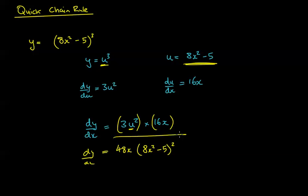It's a quick way of seeing it: it's the derivative of the expression imagining that the bracket didn't exist, times the derivative of the bit inside the bracket. That's the quick way to do it. Let's look at one more example.